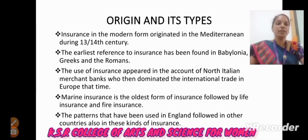Insurance origin and its types: Insurance in modern form originated in the Mediterranean during the 13th–14th century. The earliest reference to insurance has been found in Babylonia, Greece and Rome. The use of insurance appeared in the accounts of North Italian Merchant Banks, who then dominated international trade in Europe at that time. Marine insurance is the oldest form of insurance, followed by life insurance and fire insurance. The patterns that have been used in England were followed in other countries also in these kinds of insurance.